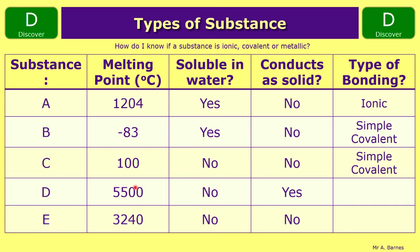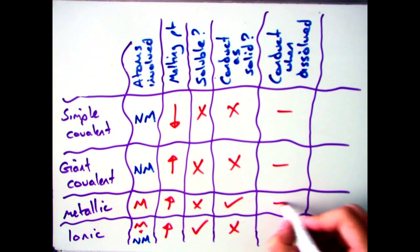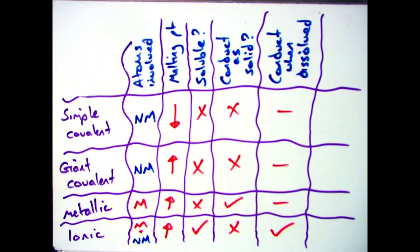Looking at substances D and E with melting point, solubility, and whether they conduct as a solid: D has a high melting point, is insoluble in water, and conducts as a solid — the only type that conducts as a solid is metallic, so you know that straight away. E has a high melting point, is insoluble, and doesn't conduct as a solid, so it could be ionic or giant covalent — most of the time in this situation it will be giant covalent. Note that the only type that conducts when dissolved is ionic; simple covalent, giant covalent and metallic do not.